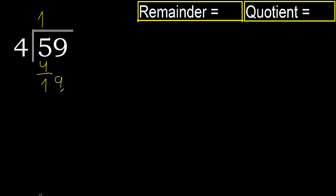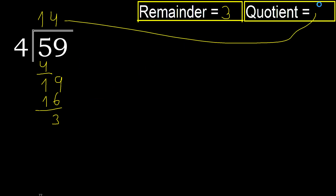19. 4 multiplied by 4 is 16 — 16 is not greater. 19 minus 16 is 3. Next there is no number. Finish: 3, 14. Answer: 14 remainder 3.